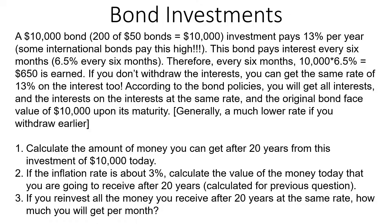You're investing at a 13% rate and the bond condition says it's going to pay every six months. Half of 13% is 6.5%, so you're going to get $650 every six months. The policy also says that if you don't withdraw anything, you also earn interest on the interest — on that $650 as well. And then there is a 20-year maturity period.